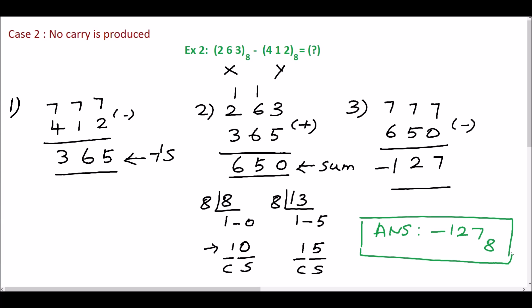We will summarize the steps. First, find the 7's complement for the subtrahend. Then add the 7's complement with the first number. If the carry is generated, add the carry with the least significant bit of the sum. If there is no carry, then take the 7's complement for the sum and assign the negative sign.